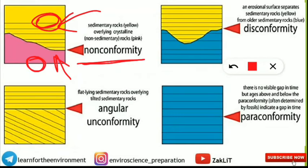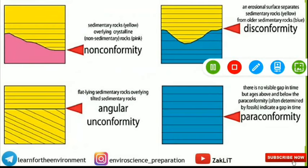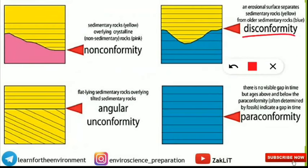The next kind of unconformity is disconformity. Here the yellow color denotes newly formed sedimentary rocks, and the blue color denotes older sedimentary rocks — that's the key thing to note. When older sedimentary rocks are beneath newer sedimentary rocks, that surface or discontinuity is called disconformity.